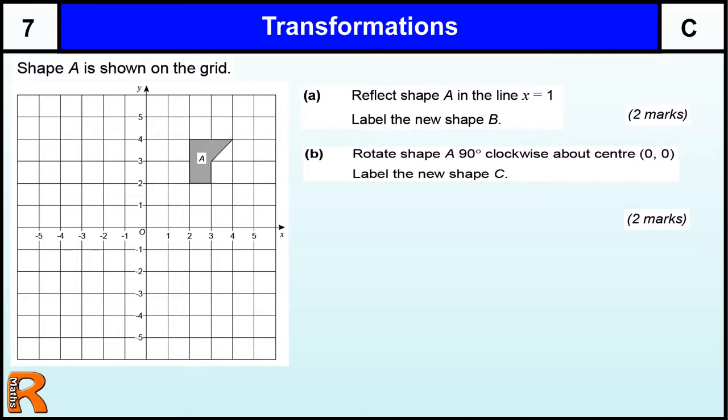Here we have a transformations question. Reflect shape A in the line x equals 1. Now the x equals line is a vertical line and it's going through 1, so it's x equals 1.